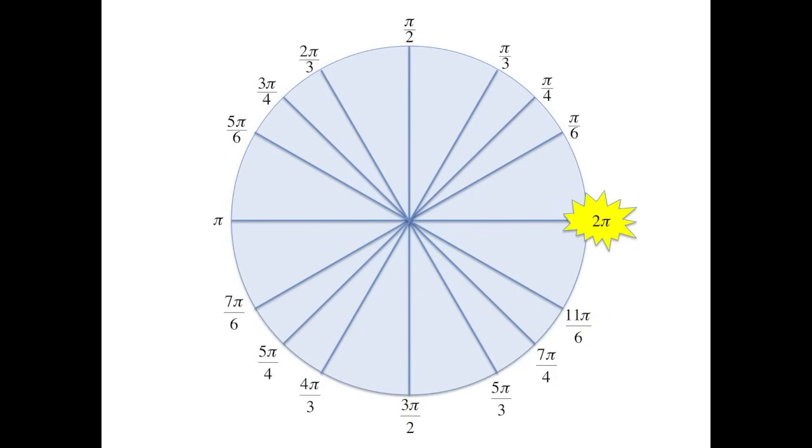Guess the whole thing now: π over 6, π over 4, π over 3, π over 2, 2π over 3, 3π over 4, 5π over 6, π, 7π over 6, 5π over 4, 4π over 3, 3π over 2, 5π over 3, 7π over 4, 11π over 6, then 2π.